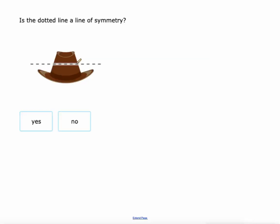And obviously here again, this hat does have a line of symmetry, right down the middle of it. But the one that they're giving us does not or is not a line of symmetry.